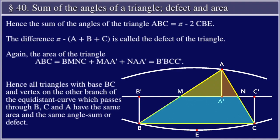Again, the area of the triangle ABC is equal to BMNC plus MAA' plus NAA', which is equal to B'BCC'. Hence all triangles with base BC and vertex on the other branch of the equidistant curve which passes through B, C, and A have the same area and the same angle sum or defect.